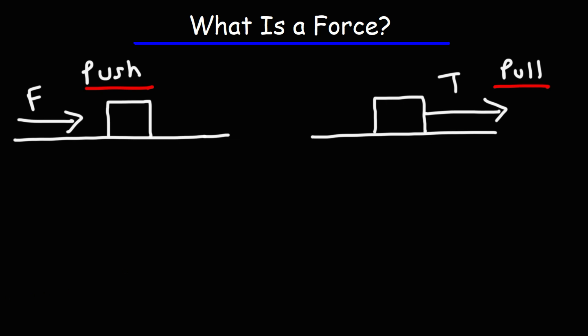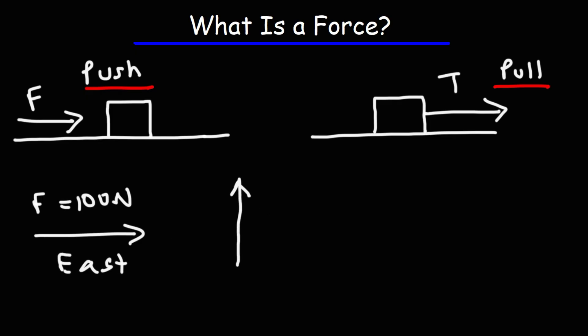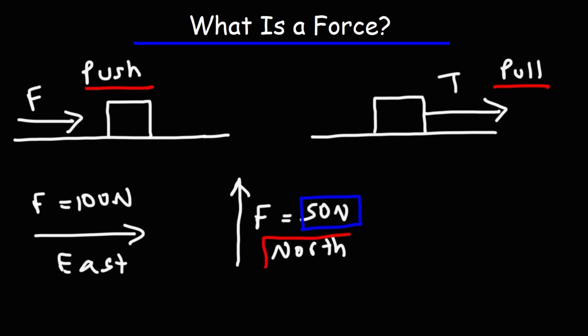Now, forces are vector quantities. A force is not a scalar quantity. A force has both magnitude and direction, so that makes them a vector. For instance, you can apply a force of 100 newtons east. You can also apply a force of 50 newtons north. The 50 newton part is the magnitude — that's the size of the force. It tells you how small or how big the force is. North or east is the direction of the force. Anytime you have a quantity that has magnitude and direction, what you have is a vector.